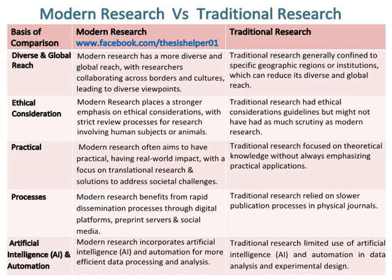Modern research incorporates artificial intelligence, AI, and automation for more efficient data processing and analysis. Whereas traditional research had limited use of artificial intelligence, AI, and automation in data analysis and experimental design.